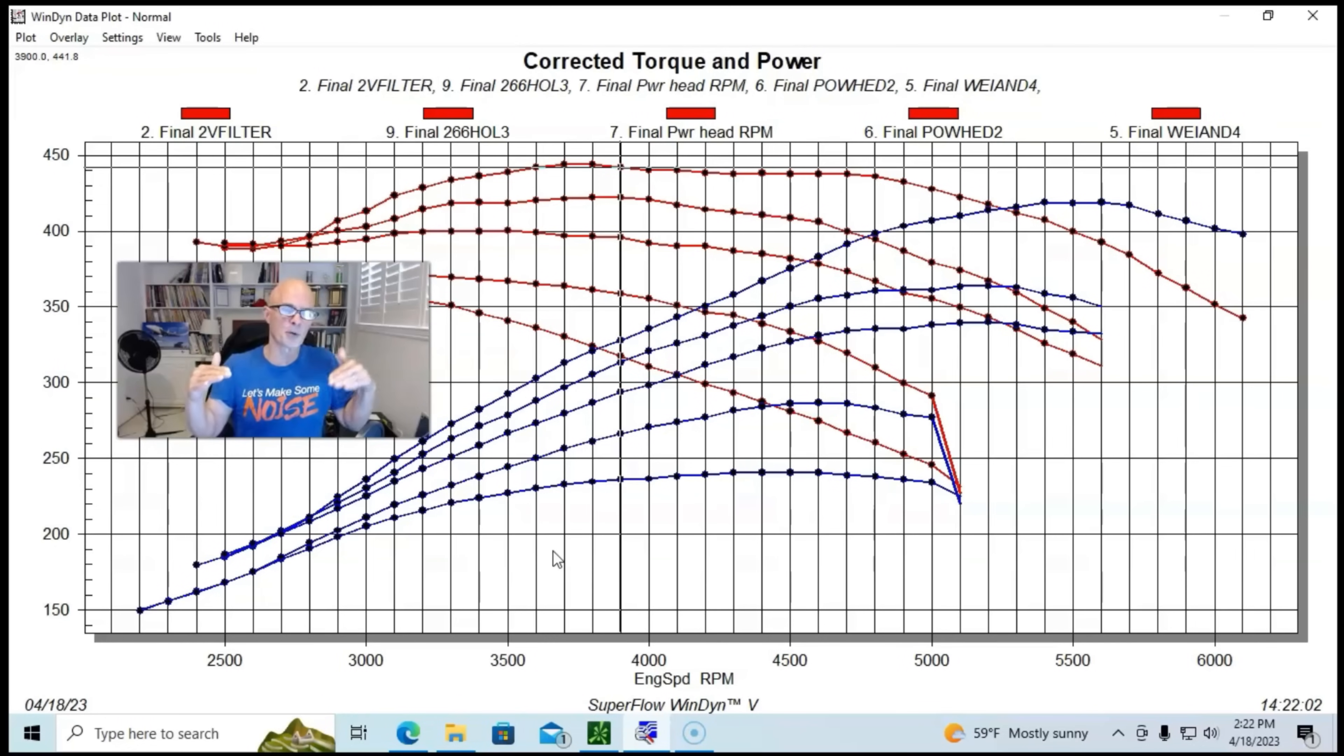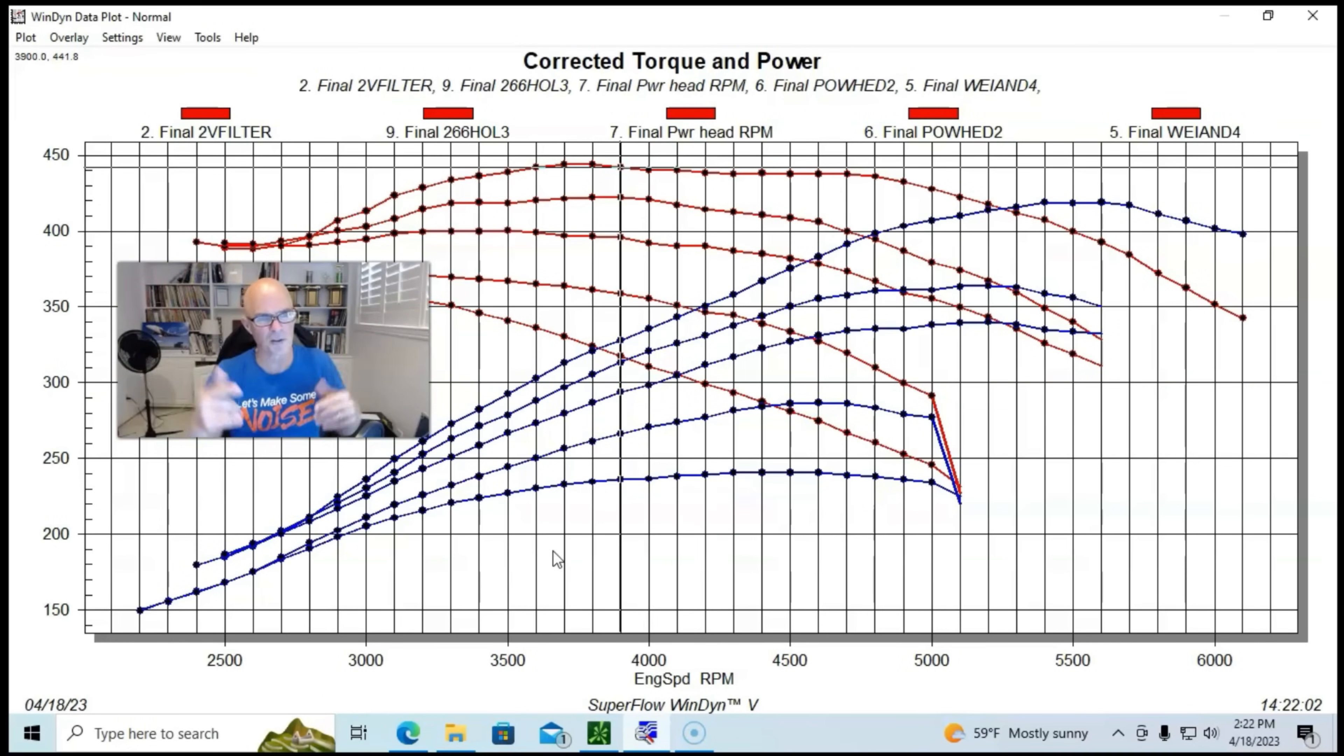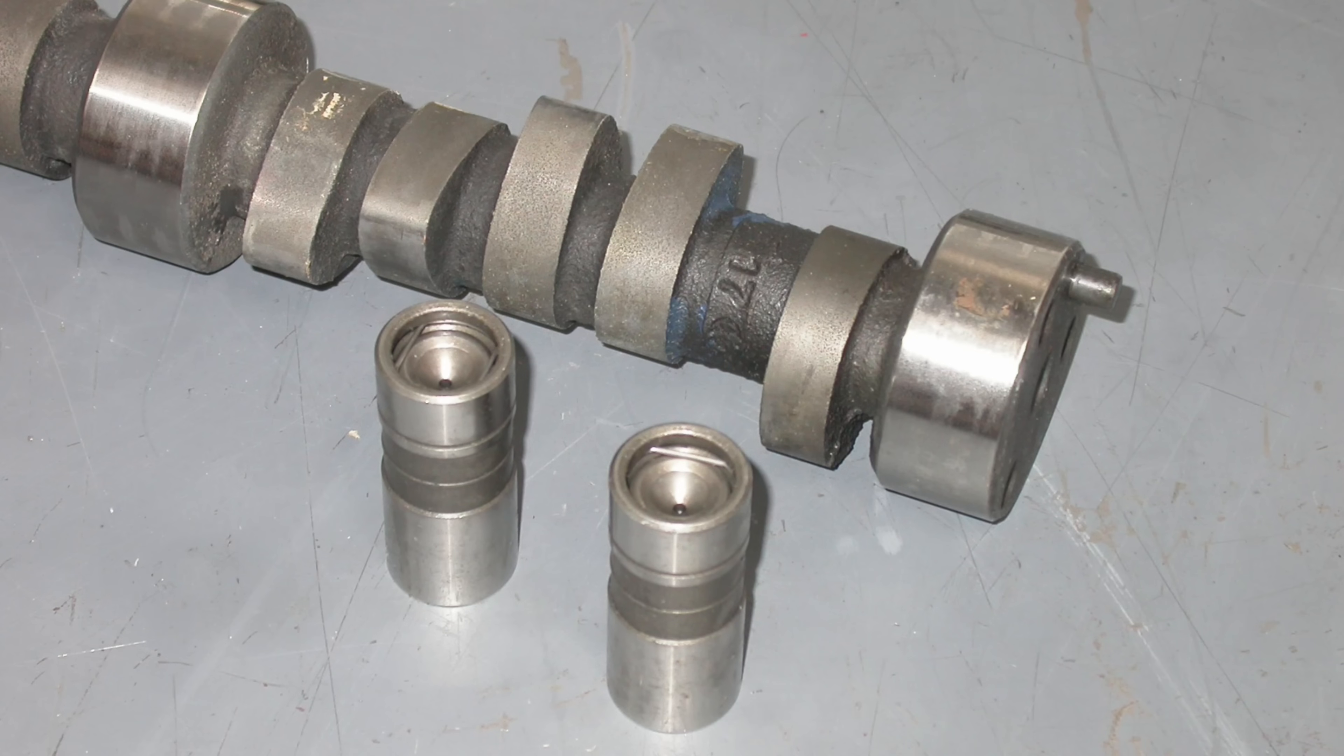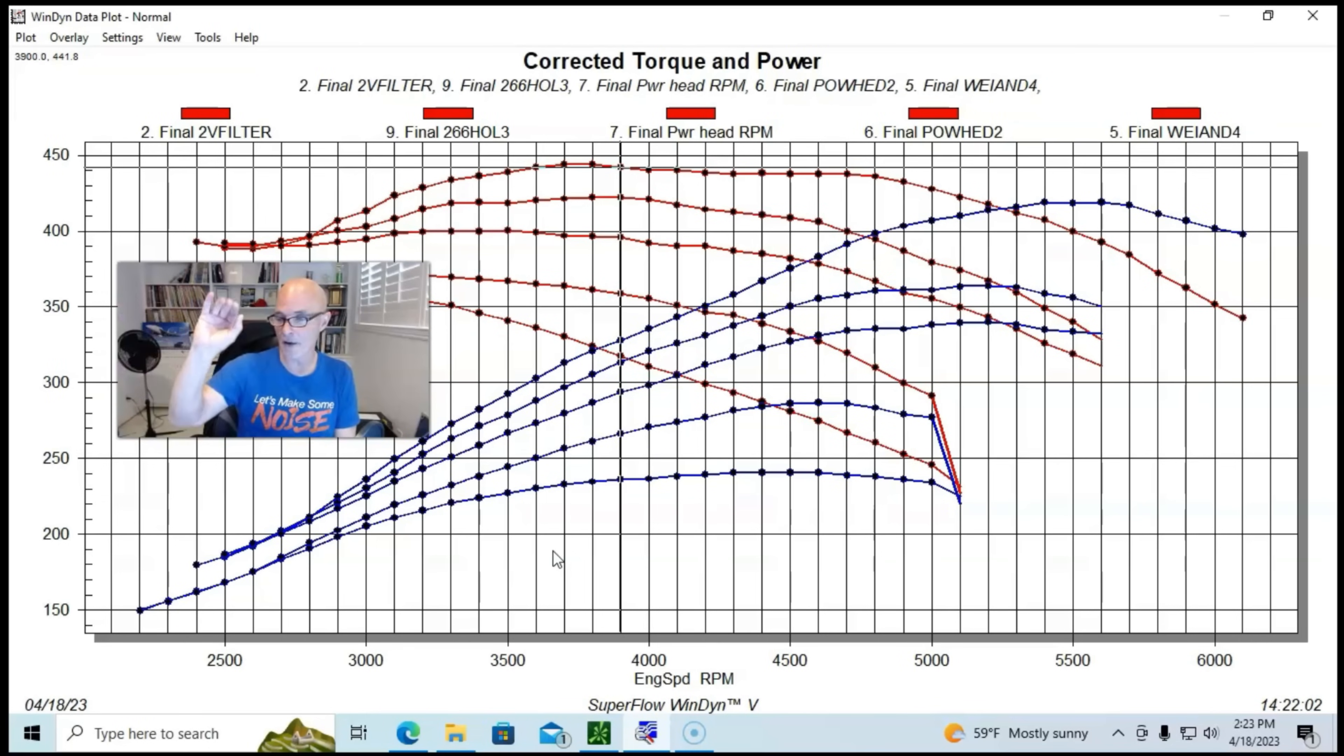In this case we went with a 268 Extreme Energy hydraulic flat tappet. There would be no difference in price between the bigger 268 and the Pure Energy camshaft - I don't think that there's any difference at Summit between those two camshafts. If you're going to pick the intake manifold and camshaft and cylinder head upgrade, you just pick the bigger versions all together.